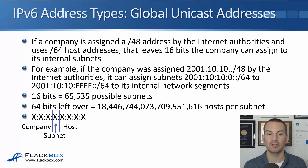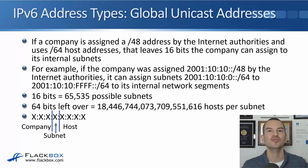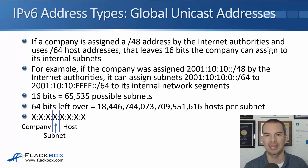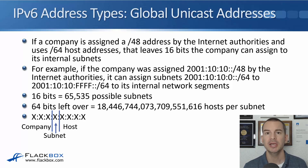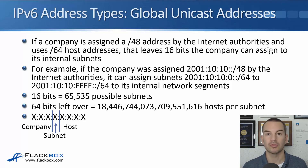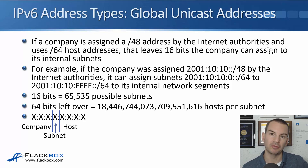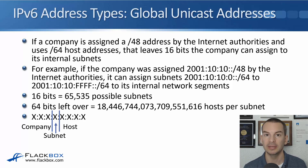That also leaves 64 bits for the host address — a huge number of hosts that you could have in one subnet; you're never going to get anywhere near that number. A common way the IPv6 address is divided up is that the first three hextets are the overall /48 block assigned to the company, the fourth hextet is divided into different subnets, and the last four hextets are assigned to the individual host.